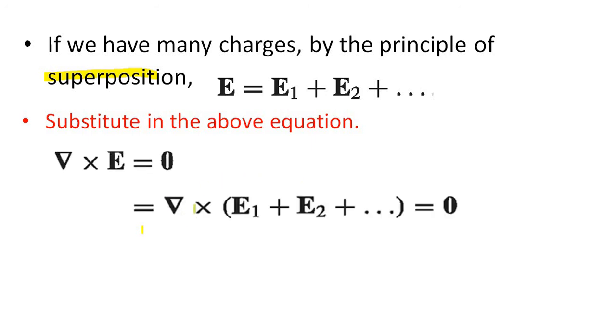Then that's equal to del cross of, instead of E, we have to substitute E1 plus E2 plus etc. So that's equal to zero. Or del cross E1 plus del cross E2 plus etc equal to zero.